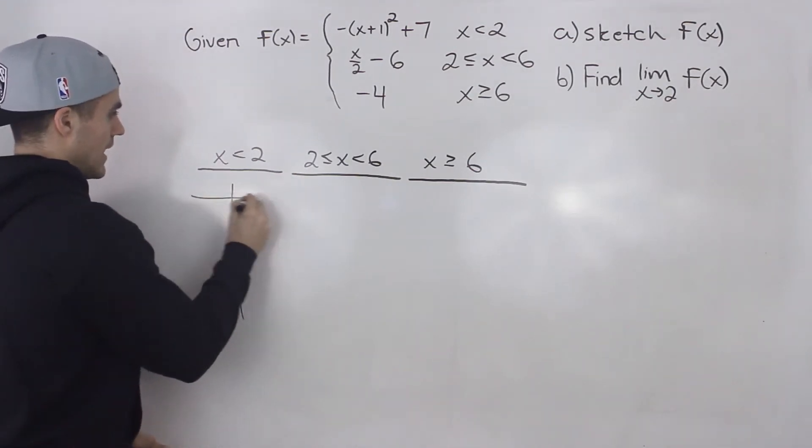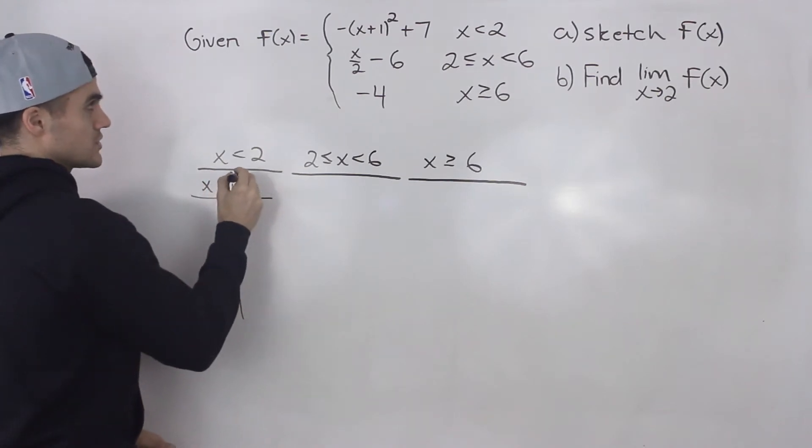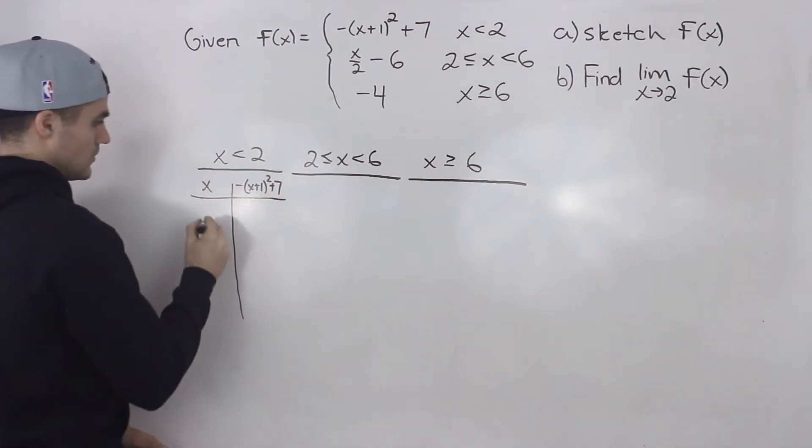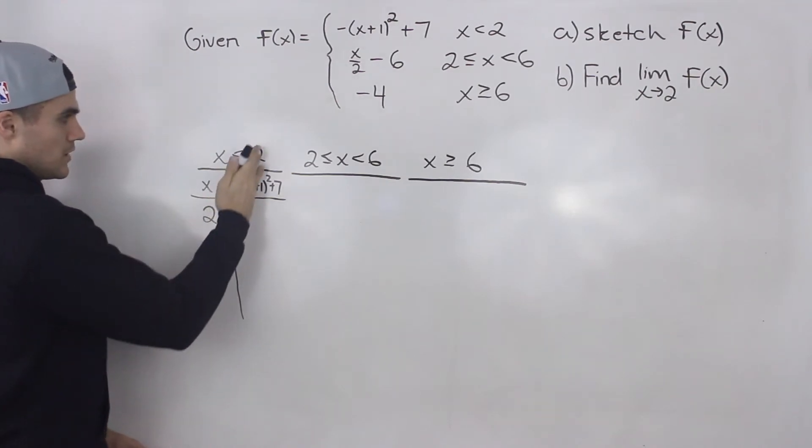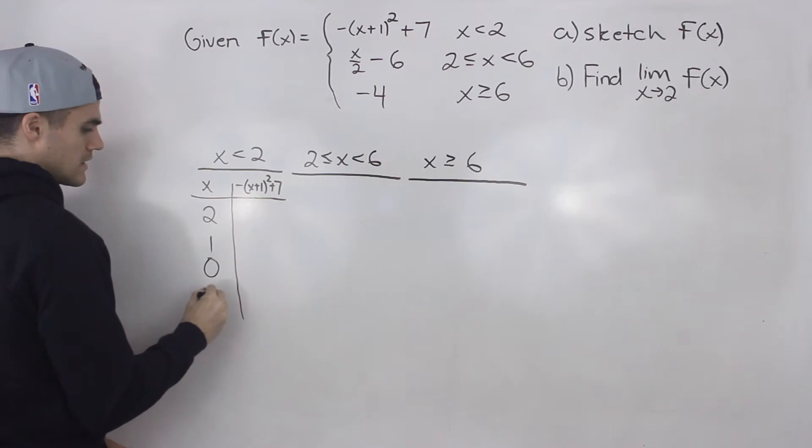Starting off with this one, when x is less than 2, we know that the function is defined by negative x plus 1 squared plus 7. So what you want to do is you want to take an x value of 2 and you want to pick some x values that are less than 2. So let's say 1, 0, and then negative 1.